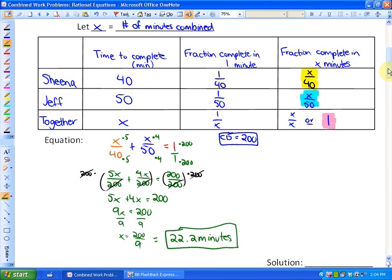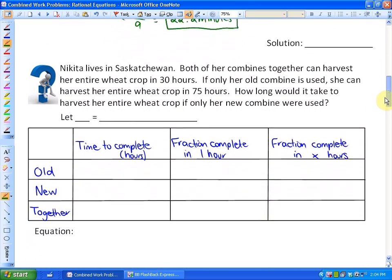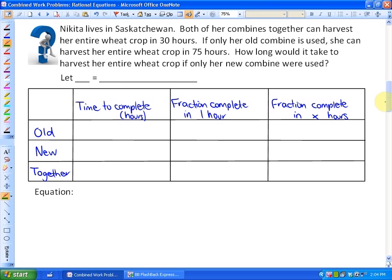In this next example, we're going to be told how long it takes for a job to be done combined and how long it takes one object, so we want to find out how long it takes the other object. Nikita lives in Saskatchewan. Both of her combines together can harvest her entire wheat crop in 30 hours. Together in one hour, they can be done 1/30, and in x hours, x/30.